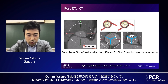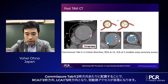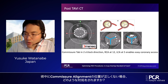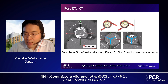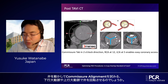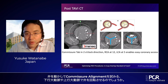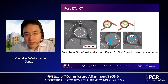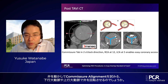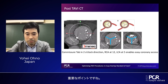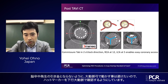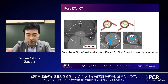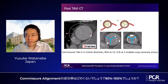Whenever the commissure tab is around two o'clock, RCA at 12 o'clock and LCA at five o'clock enables easy coronary access. If the commissure alignment is not in the correct position during the procedure, where do you adjust the THV — in the descending aorta or still in the ascending aorta? We would like to avoid stroke by limiting unnecessary back-and-forth movement across the aortic arch, so I always check the head marker position while in the descending aorta.